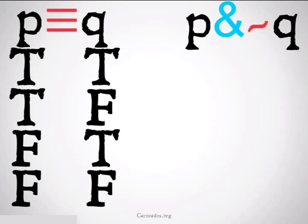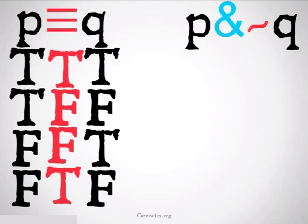First, we're going to do a truth table for P is materially equivalent to Q. We fill in the P's and the Q's. We remember that equivalence is only true when the truth values are the same, so in the first and last case.